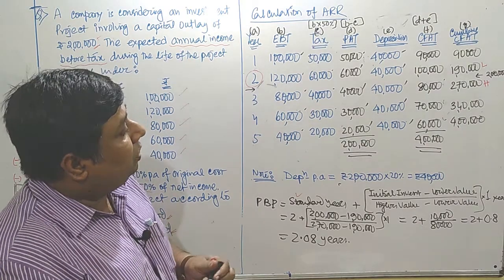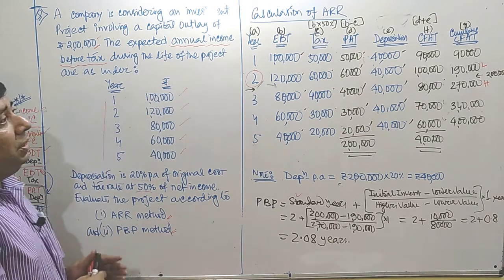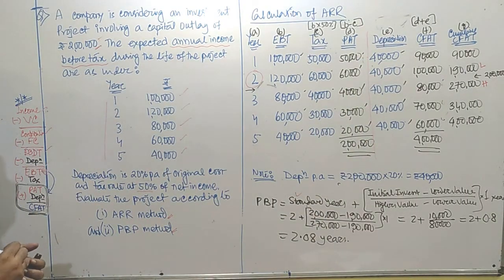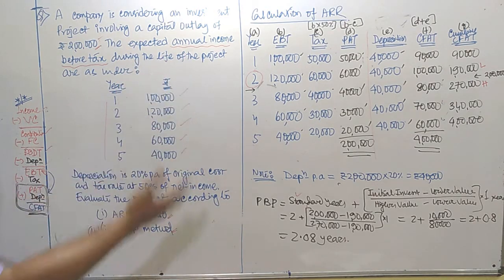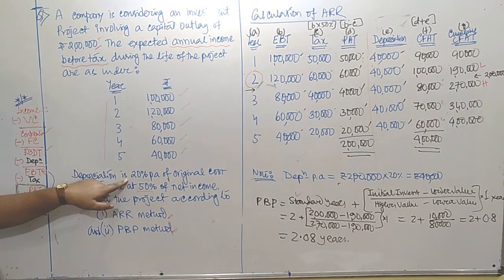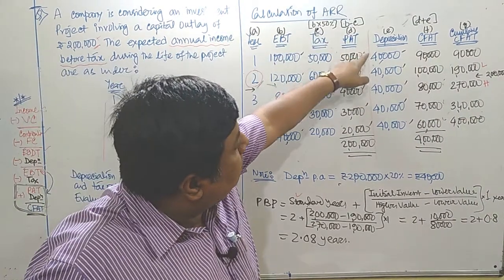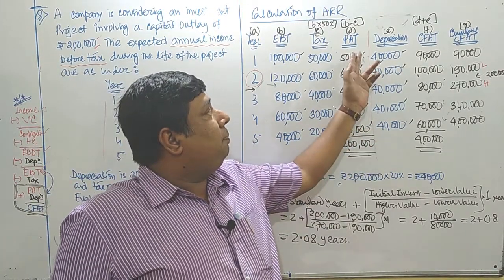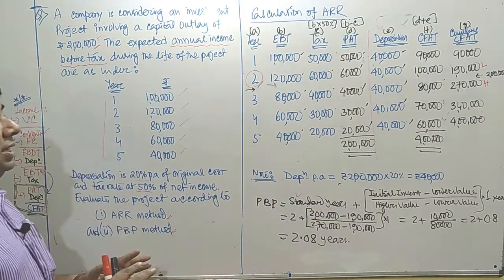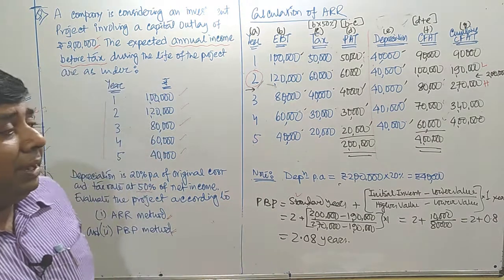We calculated ARR earlier. After ARR, we calculated PBP. For ARR we calculated up to the PAT column. For PBP we needed the CFAT column — by adding depreciation to PAT. Depreciation is 20 percent of original cost of 2 lakhs, giving 40,000. Once we plot depreciation and sum it with PAT, we get CFAT. Converting CFAT to cumulative CFAT and applying the formula automatically gives us the payback period. Thank you.